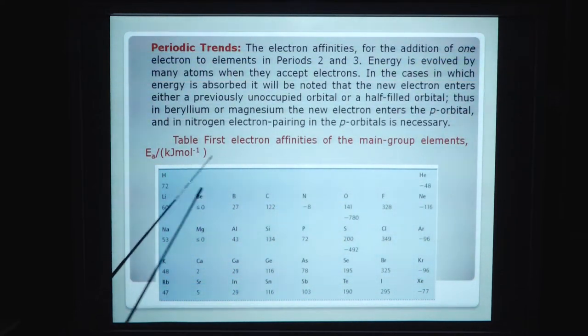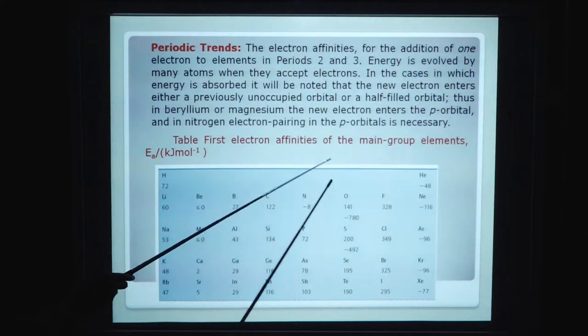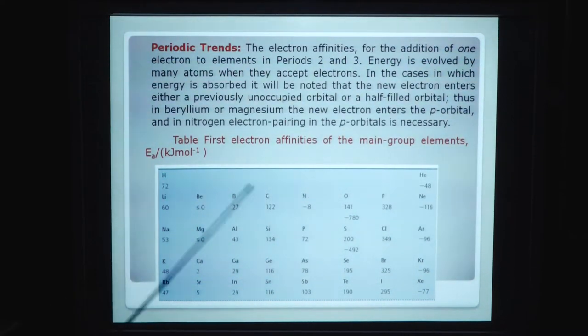The table of first electron affinity of the major group elements Ea is given below. Here you see, the electron affinity is 17 for lithium, 22 for carbon, helium is minus 48, neon is minus 116, beryllium and magnesium have 0 electron affinity, boron is 27, nitrogen is minus 8, oxygen is 141, and so on.